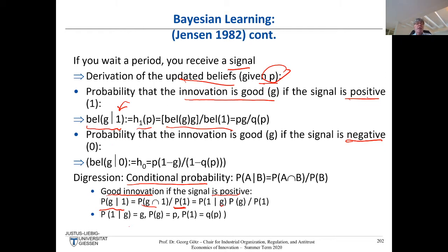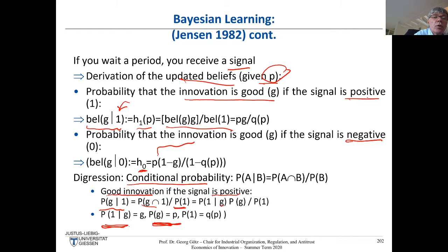So what do we get? We get the h function — h₀(p) — the updated belief if you receive a bad signal. Here p is the probability of a good innovation. The term (1-G) is the conditional probability that you receive a bad signal even though it's a good innovation, equal to 1-G. And (1-Q) is the probability of receiving a low profit overall.